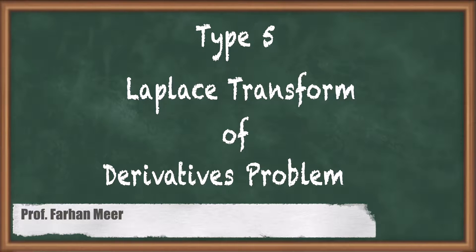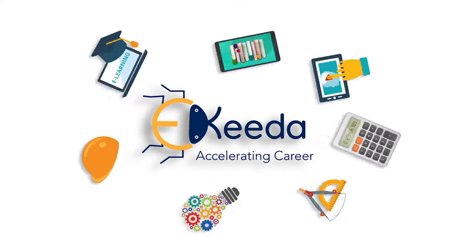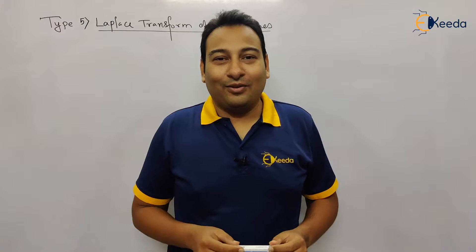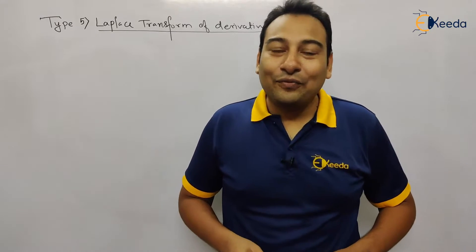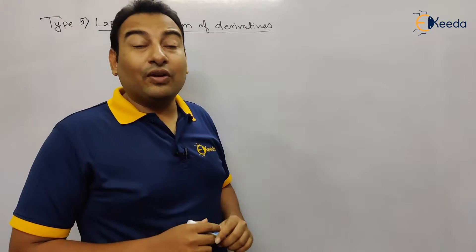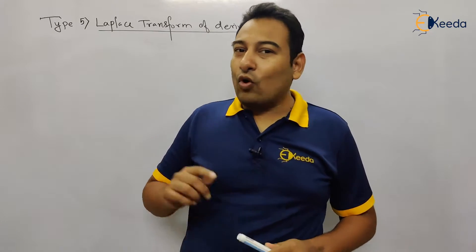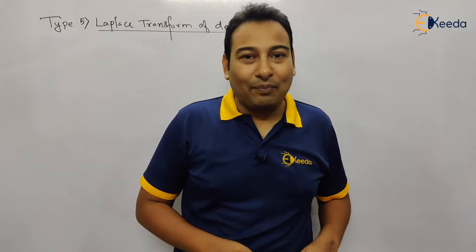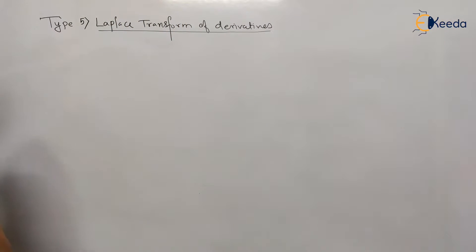Hello friends, in this video we'll be discussing Type Number 5: Laplace Transform of Derivatives, and one example on it. We'll be discussing what exactly this property is and we're going to solve one example on it.